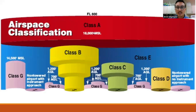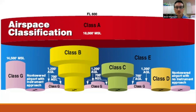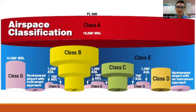Students ask me why it's MSL. There are two reasons. Early aviation planes figured out altitude based on mean sea level rather than above ground level — that's a holdover from early aviation. The other reason is consistency across the entire country. Think about it: even if you're in Colorado, where you're well above sea level when standing on the ground, it's still 18,000 feet MSL. MSL is mean sea level; AGL is above ground level.